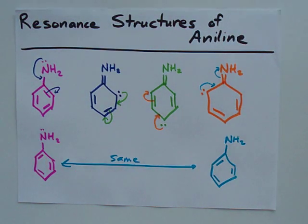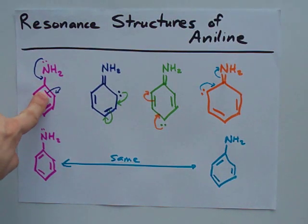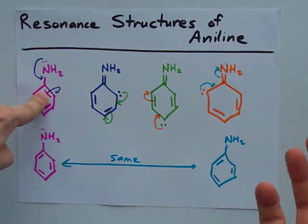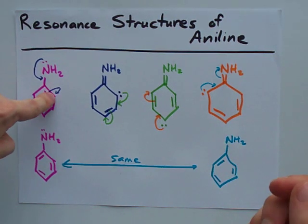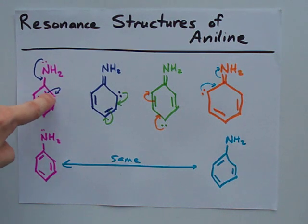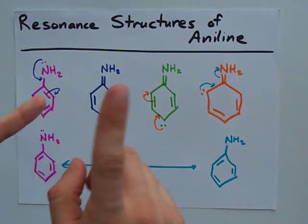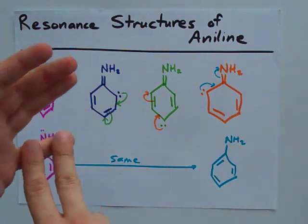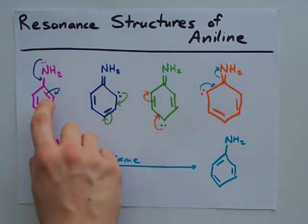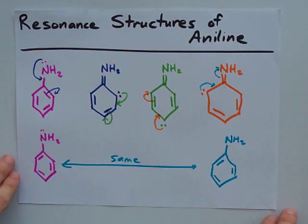These are all the Lewis structures for aniline. You end up having to push the lone pair of electrons from the nitrogen into a double bond, and that forces the delocalized electrons in the ring to be preferentially on carbons 2, 4, and 6 — or rather, the ortho and para positions relative to the amino group on the benzene ring, if you're familiar with that.